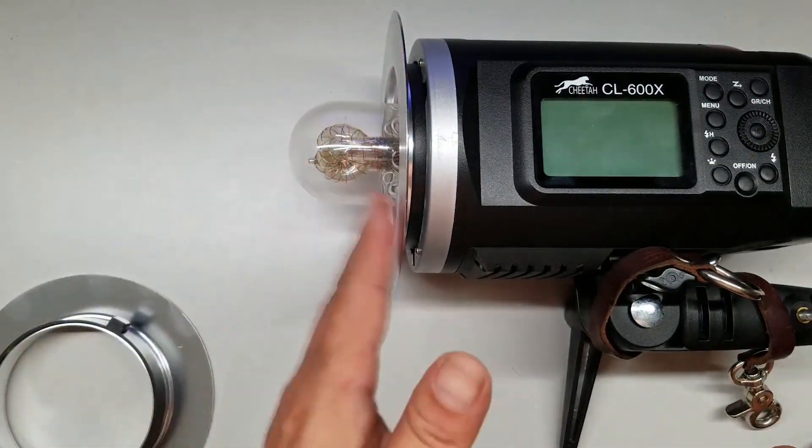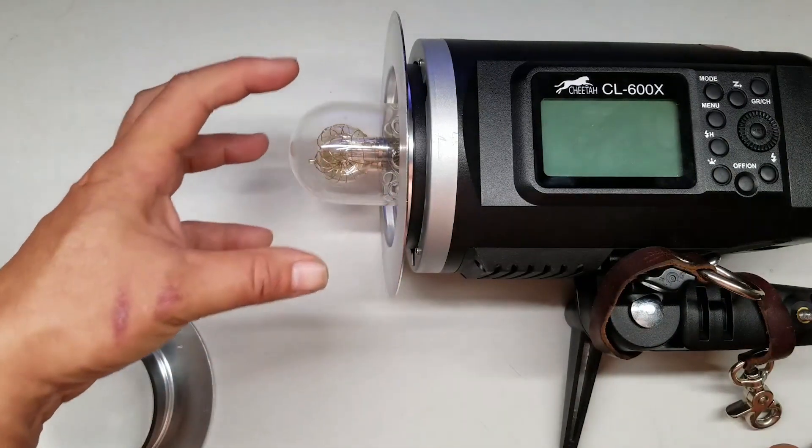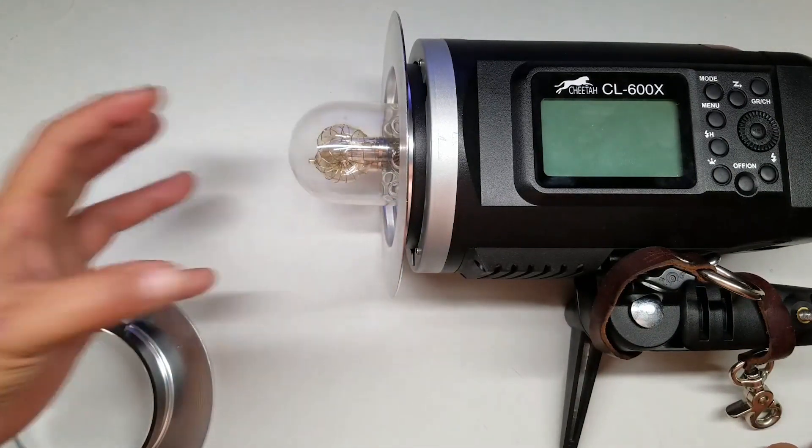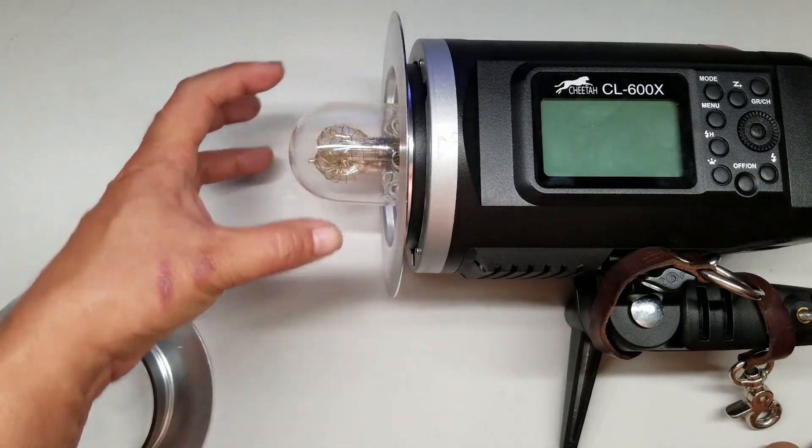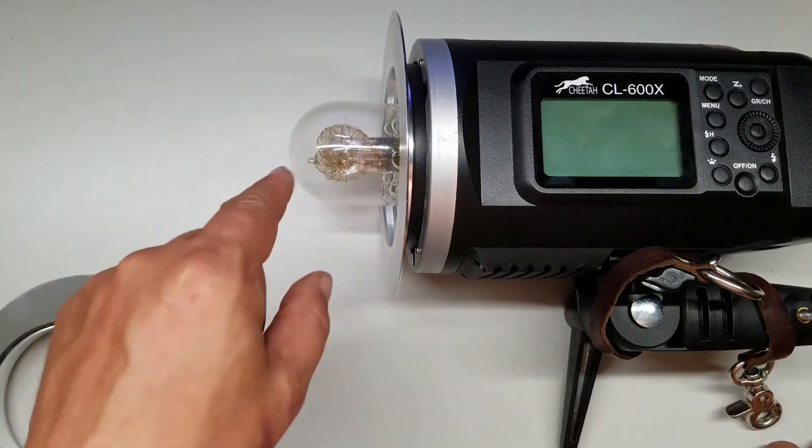Now that this low-profile one is built, you're getting the maximum spread from this bulb in your modifier. You're getting the maximum performance from this bulb inside your modifier.